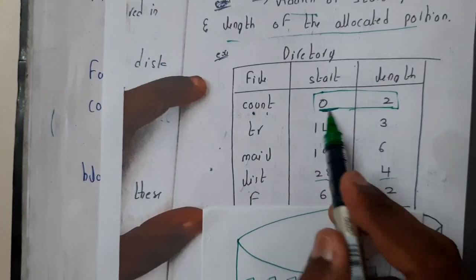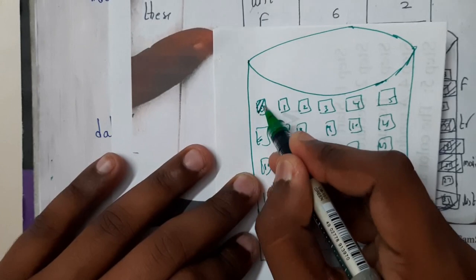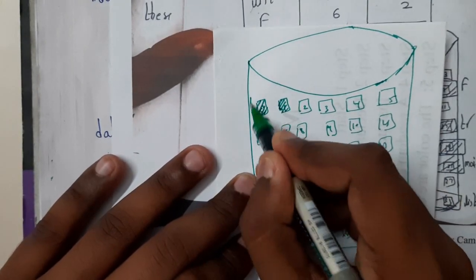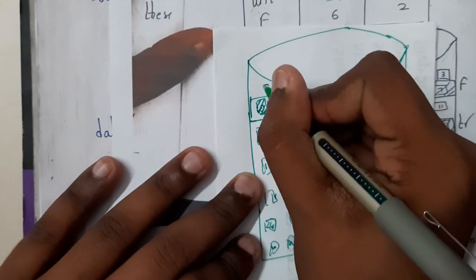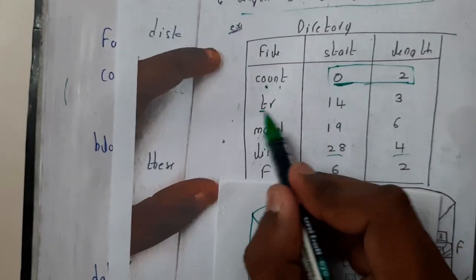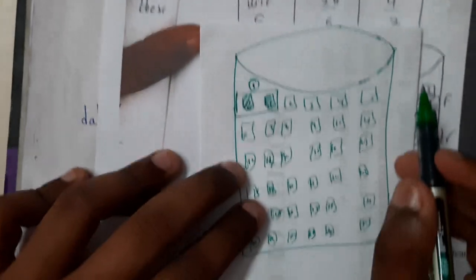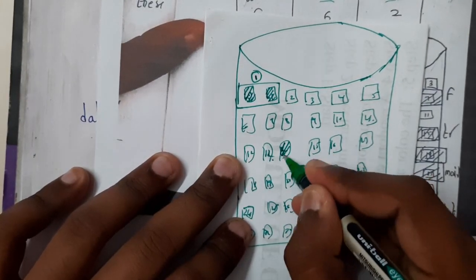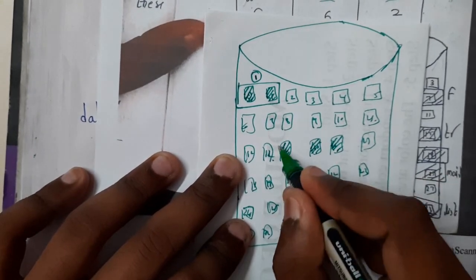Length is 2, so this is 1, and the next one makes 2. This is our first block - I'll give it number 1. That is nothing but your 'count' file. Next we have 'tr' - the file name starting at 14 with size 3. Where is 14? 11, 12, 13, 14. So this is 14, and the length is 3. We are done with 1, 2, 3. If you observe...